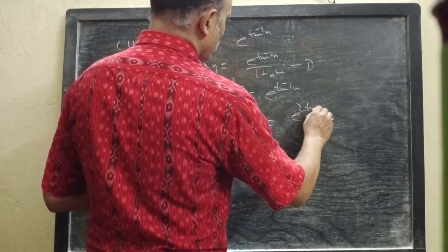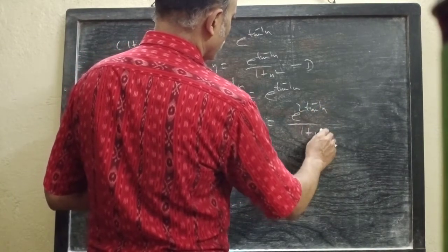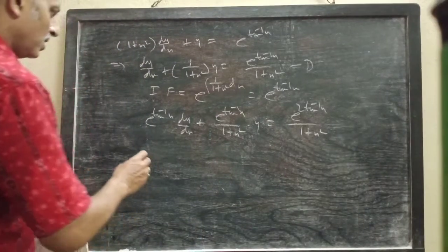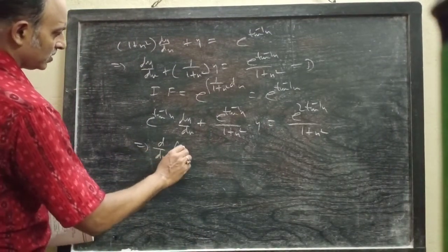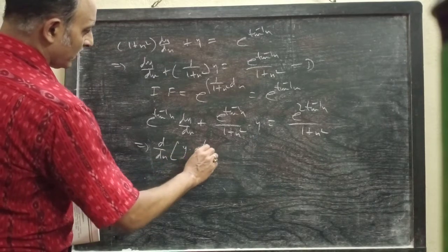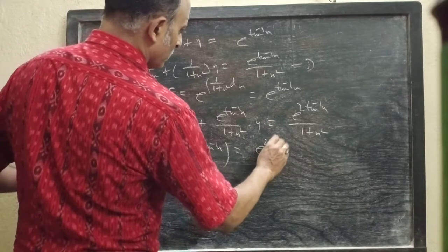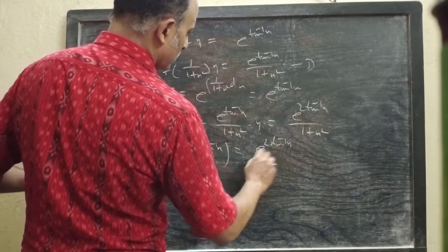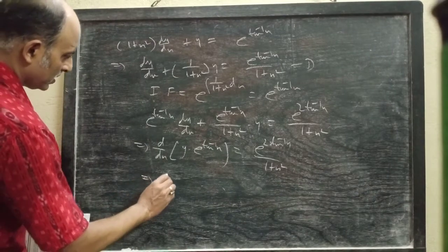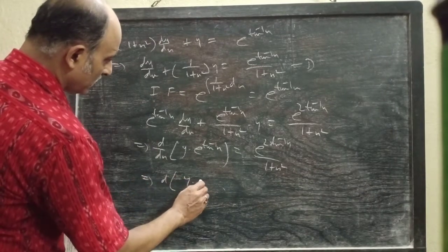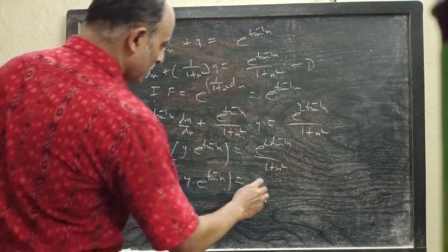The right side equals e^(2 tan⁻¹x) / (1 + x²). The left hand side can be written as d/dx of [y × e^(tan⁻¹x)]. Integrating both sides, we get y × e^(tan⁻¹x) = ∫e^(2 tan⁻¹x) / (1 + x²) dx.